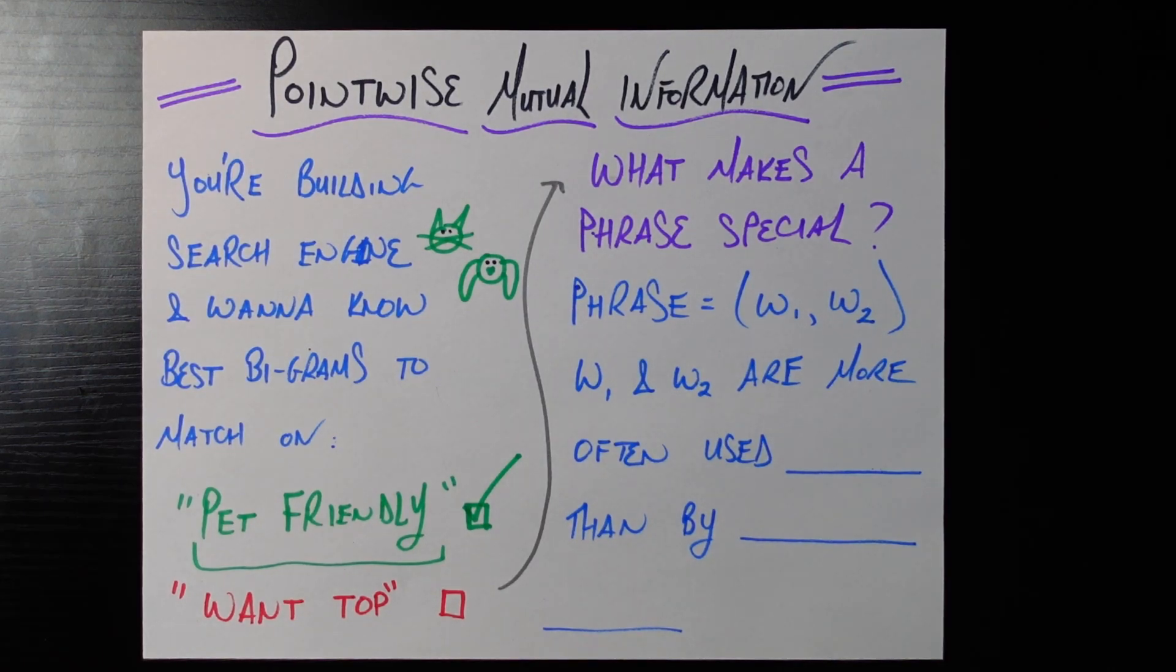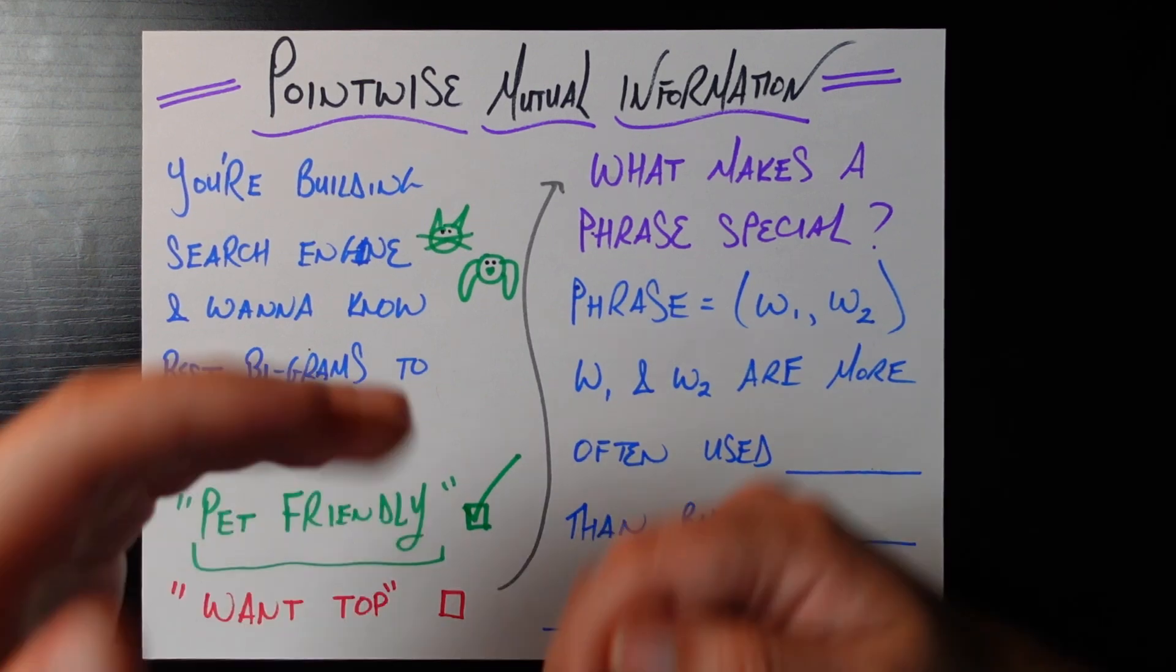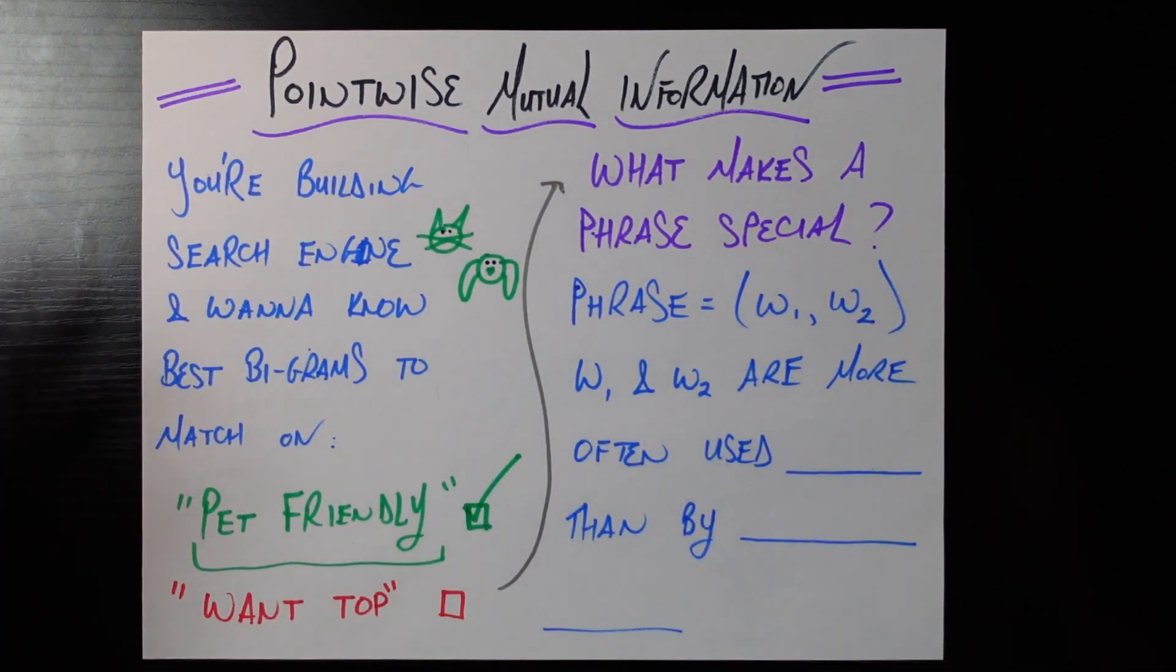Now you want to index not just single words on each document but also what are called bigrams or two words that appear together in the document. The thing is when we move from indexing just single words in documents to multiple words in documents the space of the problem blows up quadratically.